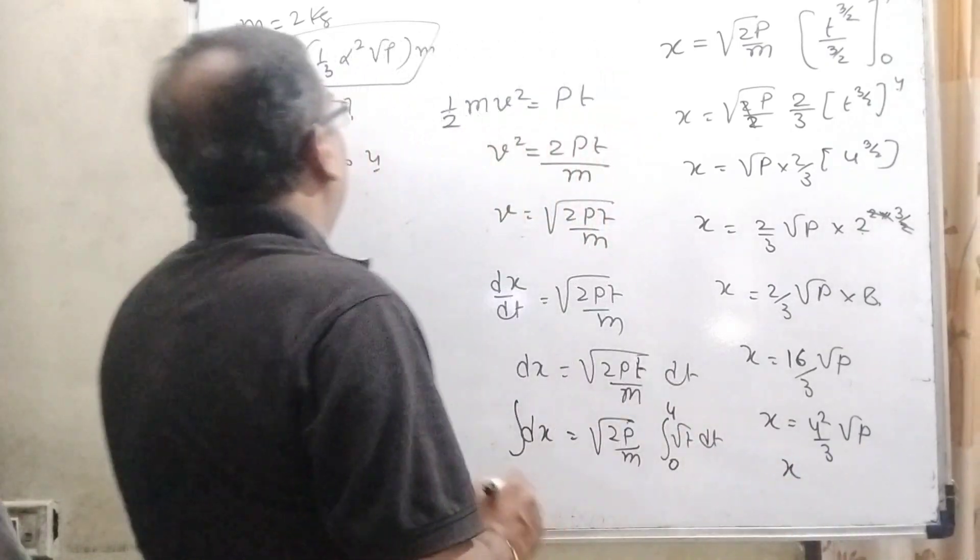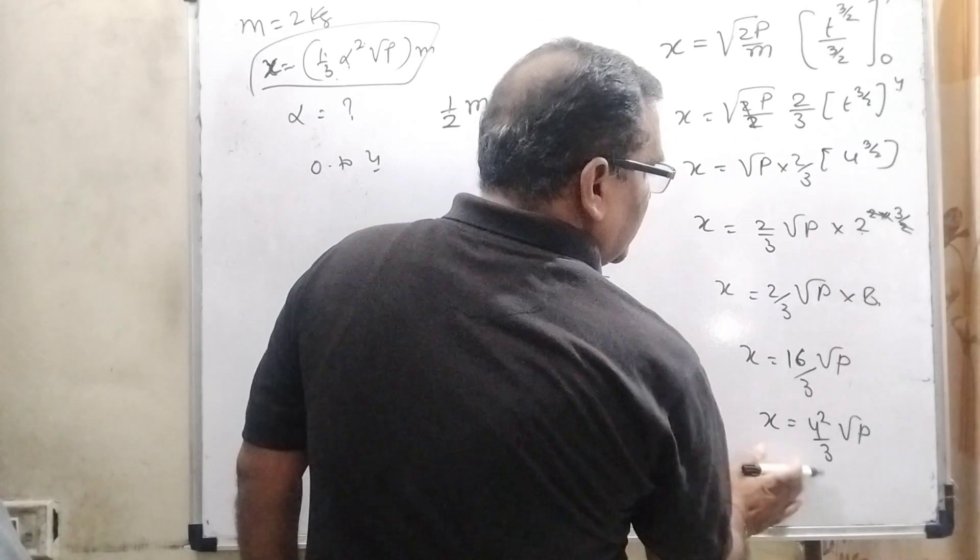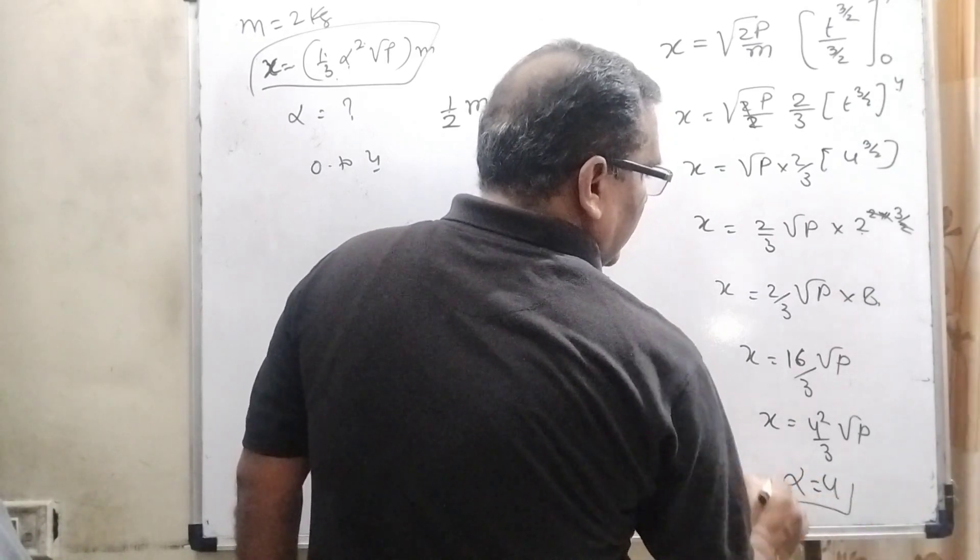Compare with this term: (1/3)α√P. Then α is equal to 4, which is our correct answer.